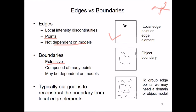In boundaries, it is extensive — you have a start point and an end point, giving a proper shape. A boundary is composed of many points, not just a few, and may be dependent on models. This is very important. Typically, our goal is to reconstruct the boundary from local edge elements, so to group edge points we may need a domain or object model.